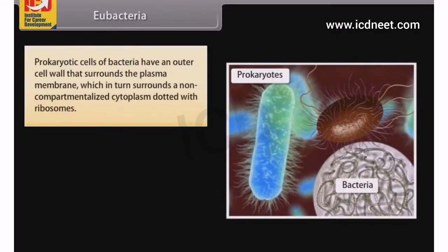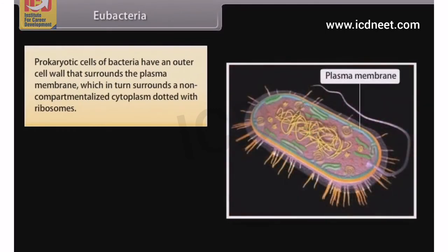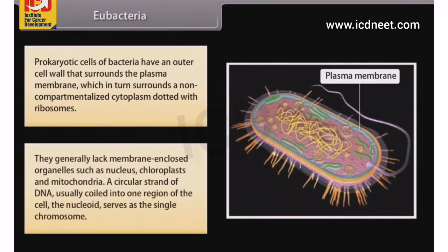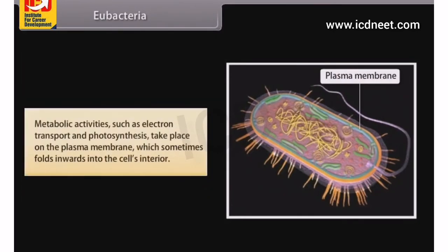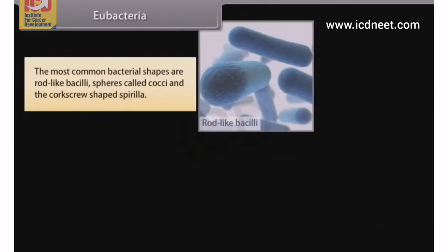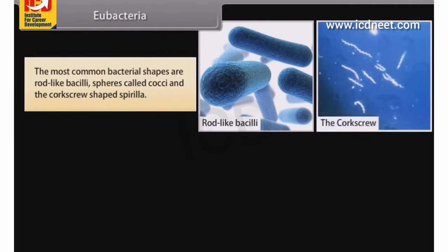Prokaryotic cells of bacteria have an outer cell wall that surrounds the plasma membrane, which in turn surrounds a non-compartmentalized cytoplasm dotted with ribosomes. They generally lack membrane-enclosed organelles such as a nucleus, chloroplasts, and mitochondria. A circular strand of DNA, usually coiled into one region of the cell called the nucleoid, serves as the single chromosome. Metabolic activities such as electron transport and photosynthesis take place on the plasma membrane, which sometimes folds inward. The most common bacterial shapes are rod-like bacilli, spheres called cocci, and the corkscrew-shaped spirilla.